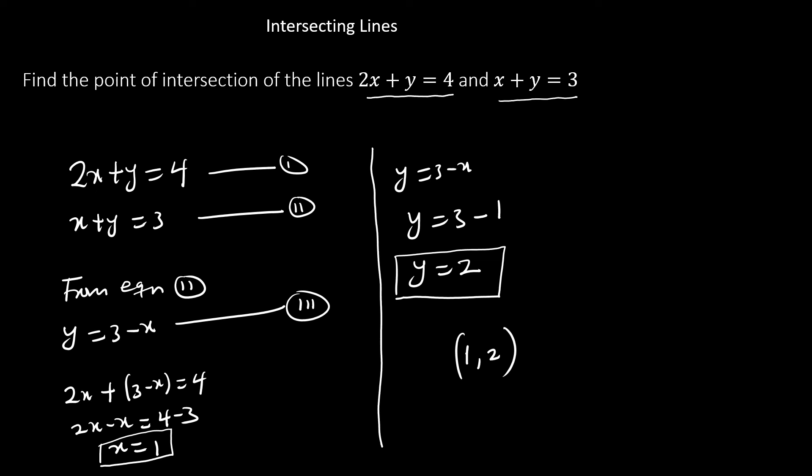Again, these two lines intersect at the point 1 comma 2. And that is simply how we can find the point of intersection of two lines that intersect. Simply solve the equations simultaneously.